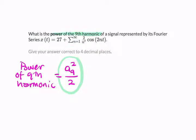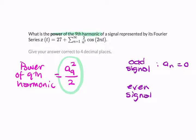So just to make it really clear, if you have an odd signal, then all the an terms are zero. If you have an even signal, then all the bn terms are zero.